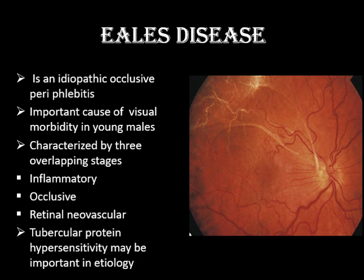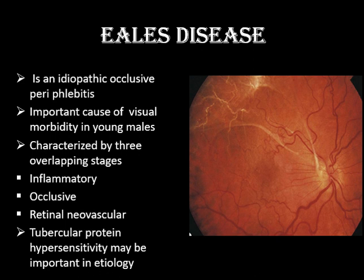The first one is Eales disease. This is not very uncommon in our part of the world, though it is not very common in western countries. This is actually an idiopathic occlusive periphlebitis — periphlebitis means inflammation of or around the veins — and this is an important cause of visual morbidity in young males. One key difference from diabetic retinopathy is that Eales disease is a disease of the periphery, whereas diabetic retinopathy changes mostly occur at the posterior pole.